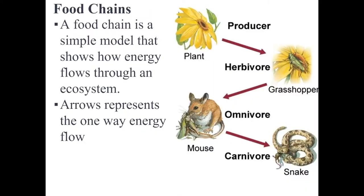We use trophic levels when building food chains, which is a linear progression system from one trophic level to the other. We only have one organism at each level, and we use arrows to show the relation between them — so from plant to grasshopper, grasshopper to mouse, mouse to snake. We keep it simple, only one organism at each trophic level, and we use it to show how much energy goes through the ecosystem.